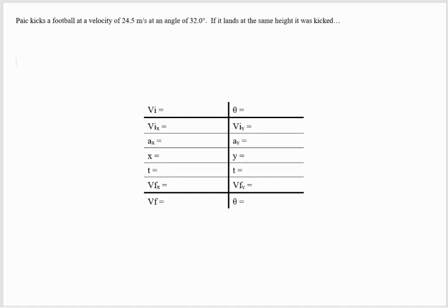Pitch kicks a football at a velocity of 24.5 meters per second, so we know that's our initial velocity, at an angle of 32 degrees, so that's our theta value. If it lands at the same height that it was kicked...